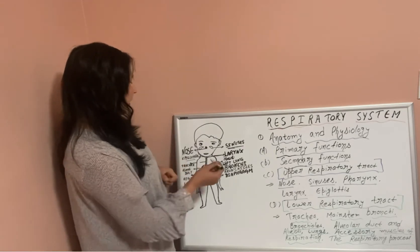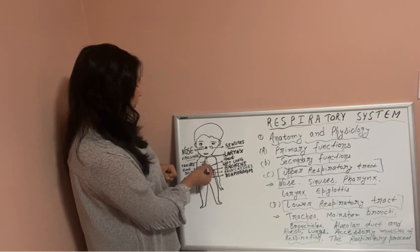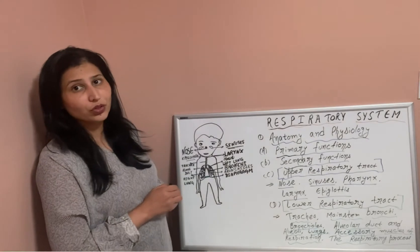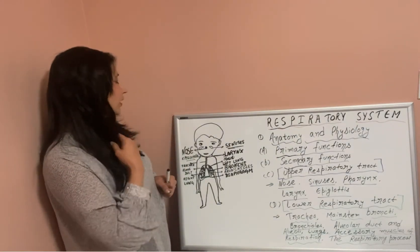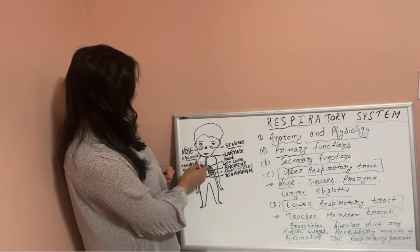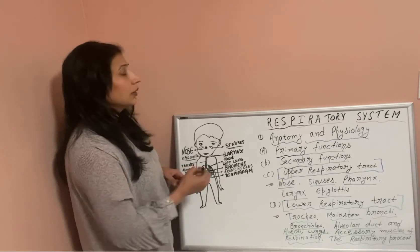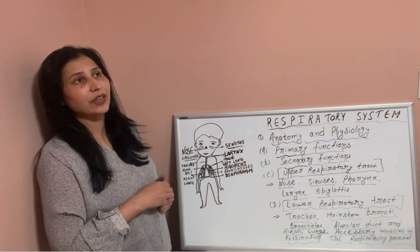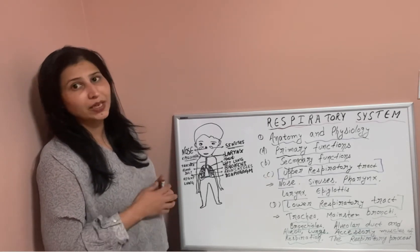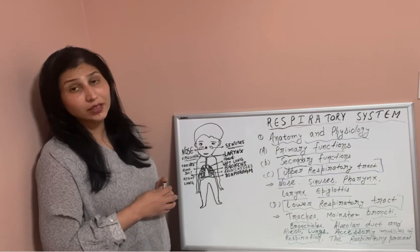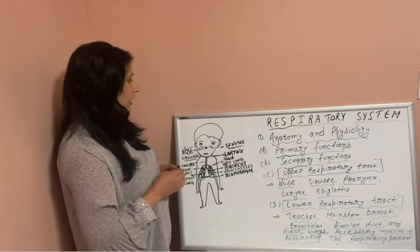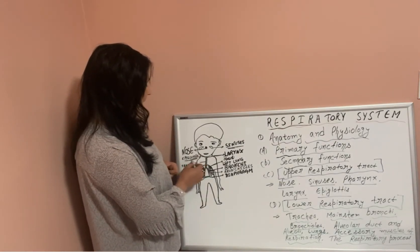The larynx is above the trachea. It is divided into the true and false vocal cords. The true vocal cords divide at the glottis, which plays an important role in the coughing mechanism — whenever we need to cough something out.